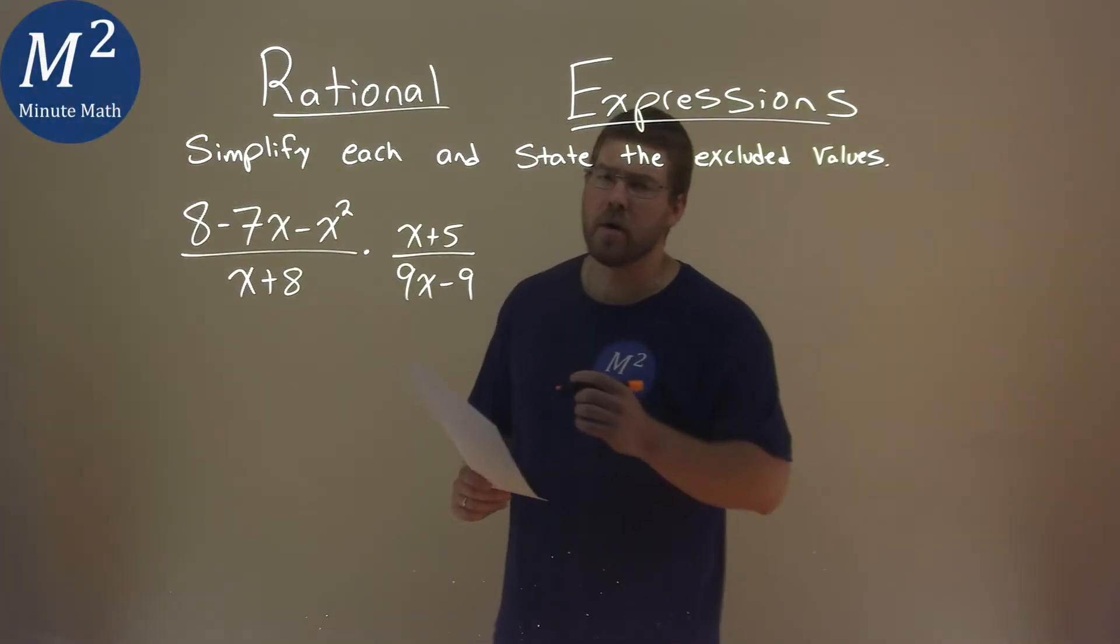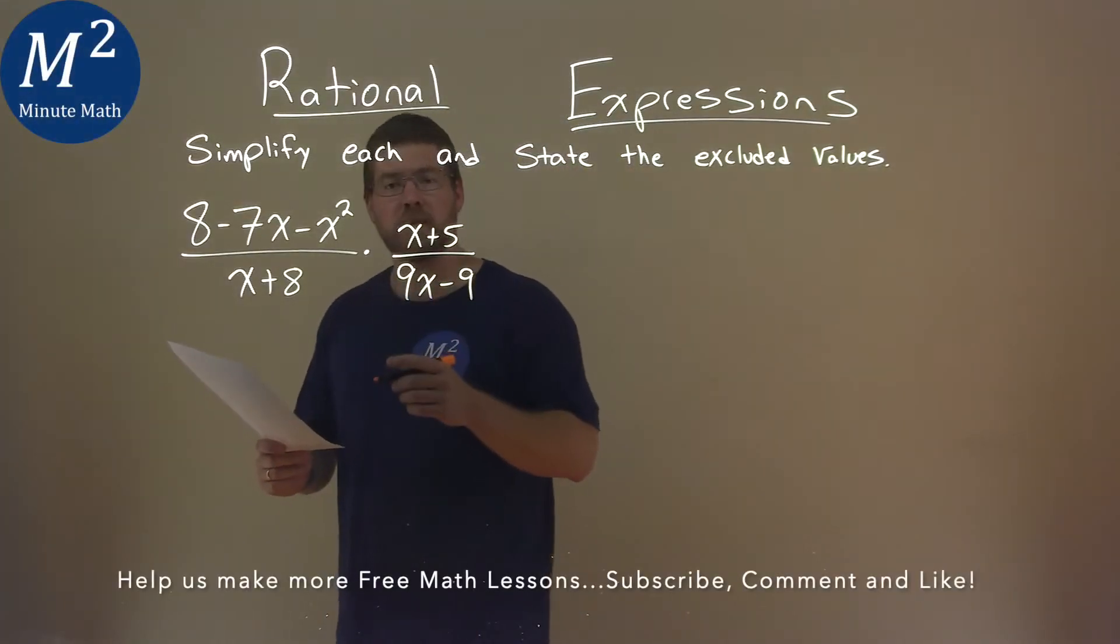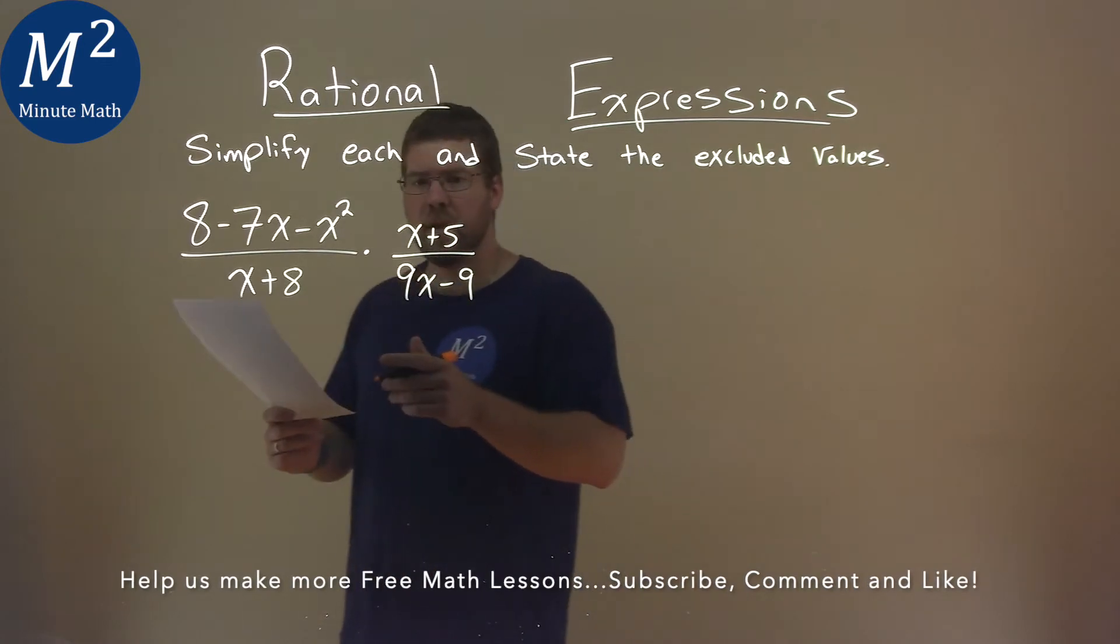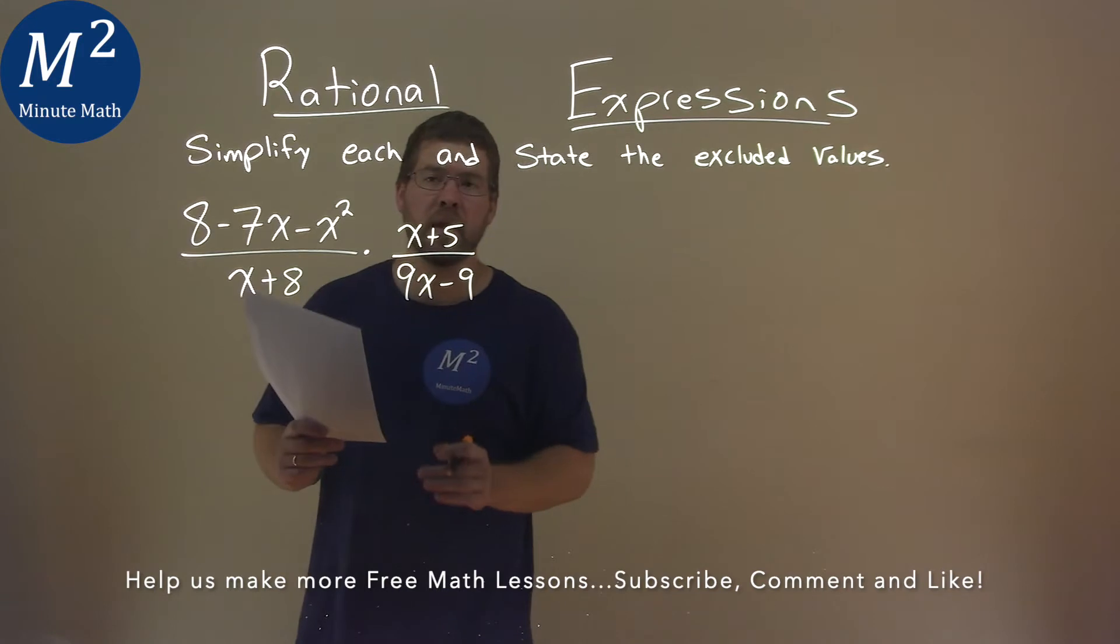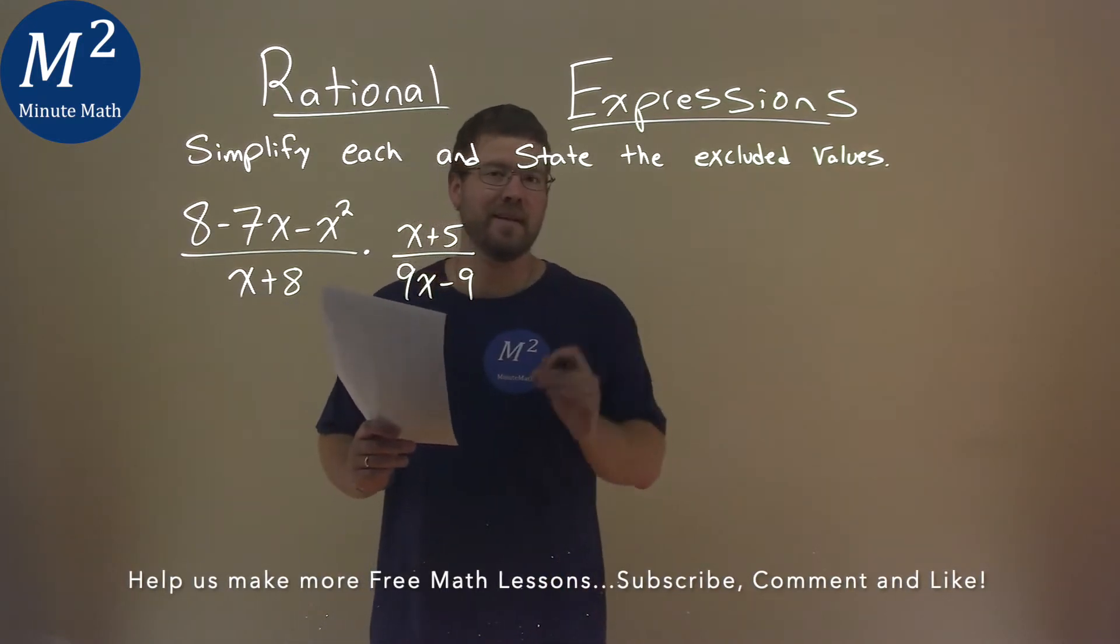We're given this problem right here, 8 minus 7x minus x squared over x plus 8 times x plus 5 over 9x minus 9, and we simplify this and state the excluded values.